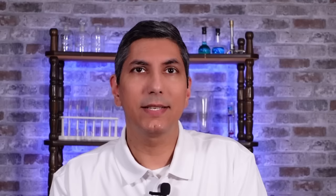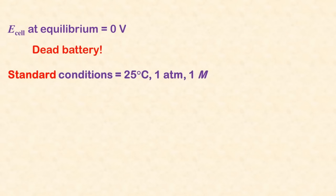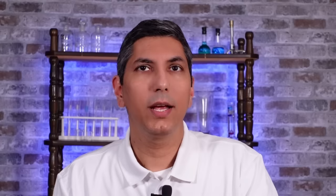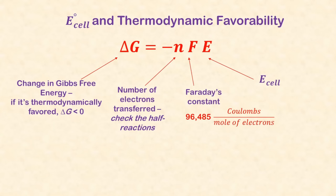Every galvanic cell has a voltage that we can calculate using a list of standard reduction potentials. As a galvanic cell runs, the voltage slowly drops until its voltage reaches zero, when we say the cell is at equilibrium. We assume galvanic cells are at standard conditions, which is 25 degrees Celsius and a concentration of 1 molar for solutions. For any other conditions, we use the Nernst equation to calculate the actual voltage. Galvanic cells are thermodynamically favored, and its delta G is equal to negative N times Faraday's constant times E, where N is the number of electrons transferred, and E is the overall voltage of the cell.